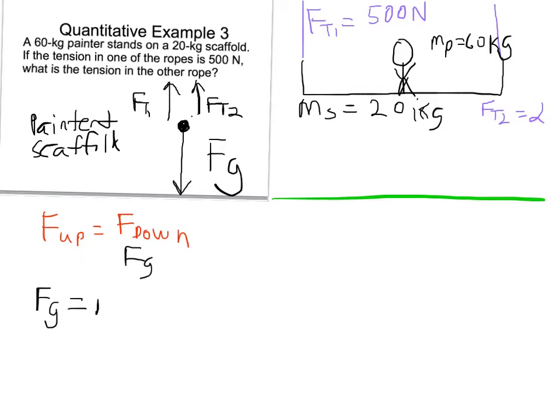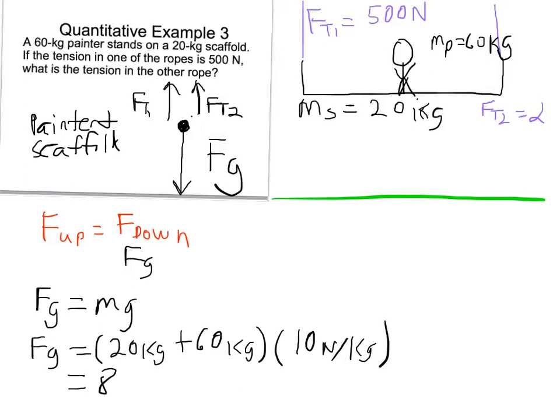Force of gravity equals mass times gravity. And I'm going to do both objects at one time. So I'm going to find the total force of gravity on the painter and the scaffold. So 60 kilograms and 20 kilograms. Times force of gravity on Earth, 10 newtons per kilogram. 20 plus 60 is 80. Times 10 is 800 newtons. Okay. That is my down force.